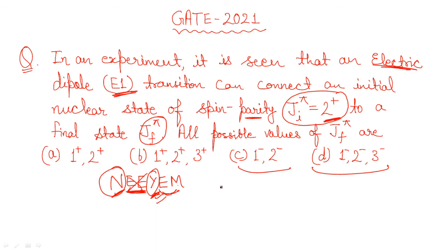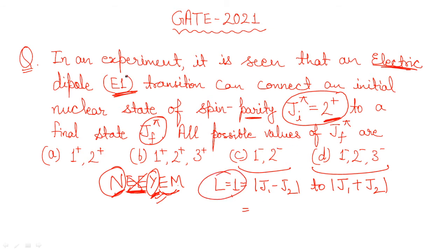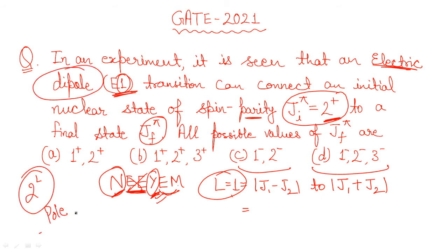Now we need to find the L value equal to 1. L ranges from |J_I − J_F| to J_I + J_F. The L value here is 1, which corresponds to a dipole transition since 2^L gives the multipole order. The initial spin J_I is 2. So we check: for J_F = 1, L ranges from 2−1 to 2+1, giving L = 1, 2, 3 — yes, L=1 is included.